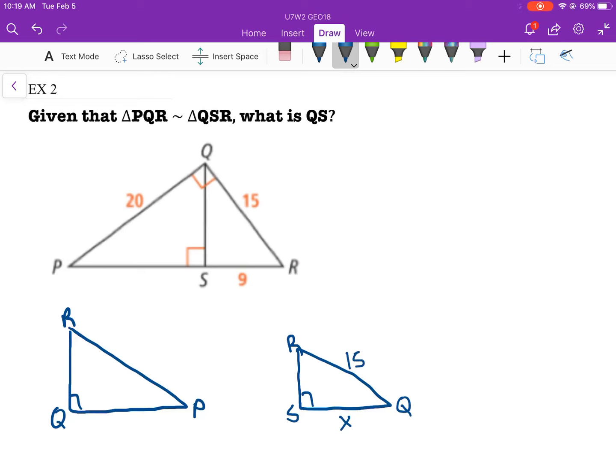We know that QR is 15. We know this is 9. We know that this is 20. So we really don't even need to use similarity here. We can just use the Pythagorean theorem to evaluate.